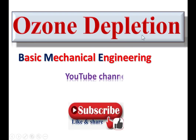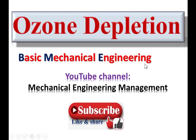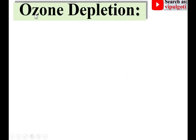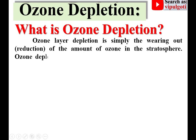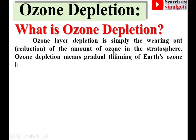Today we are going to discuss about ozone depletion for the subject basic mechanical engineering. Ozone depletion is actually a severe problem all around the world. Ozone layer depletion is simply the wearing out, or the reduction of the amount of ozone in the stratosphere — meaning the gradual thinning of Earth's ozone layer in the upper atmosphere.